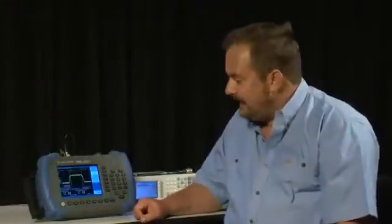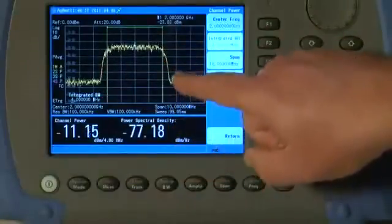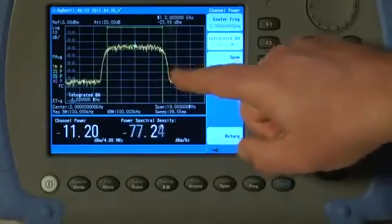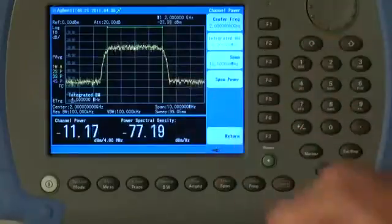What is now happening is that the analyzer is integrating under the curve, in other words counting the squares, adding up the total amount of power within these green channel power markers.